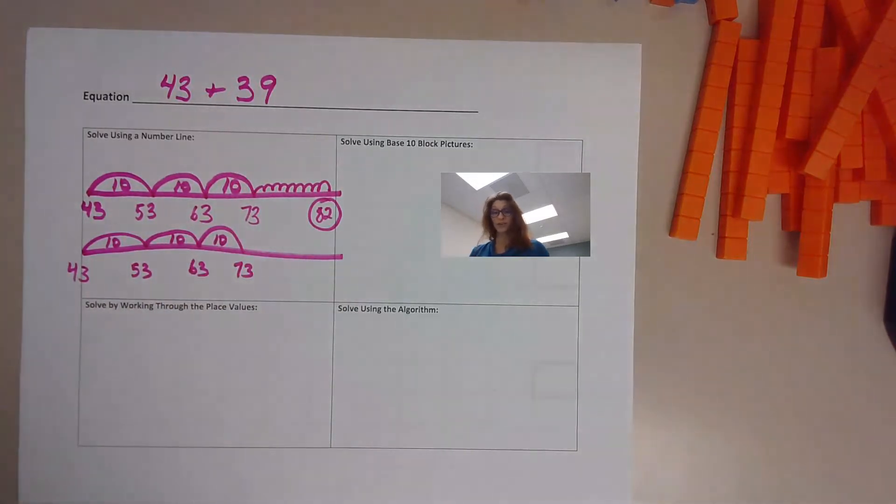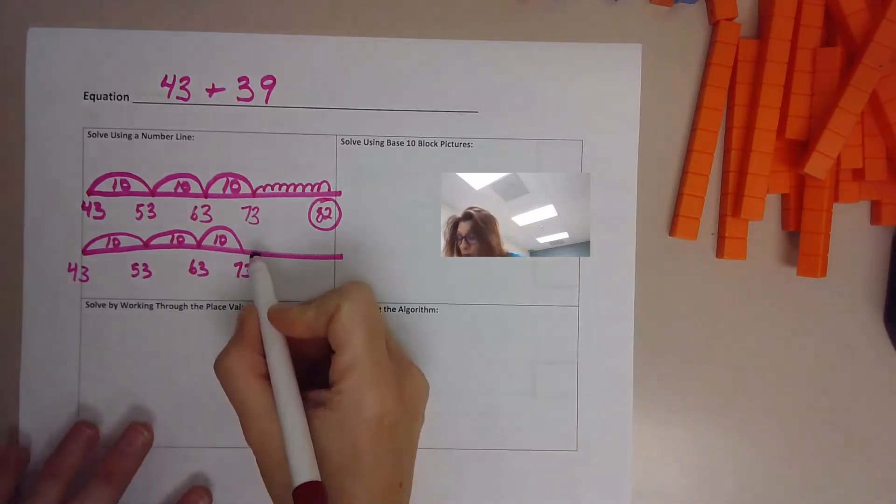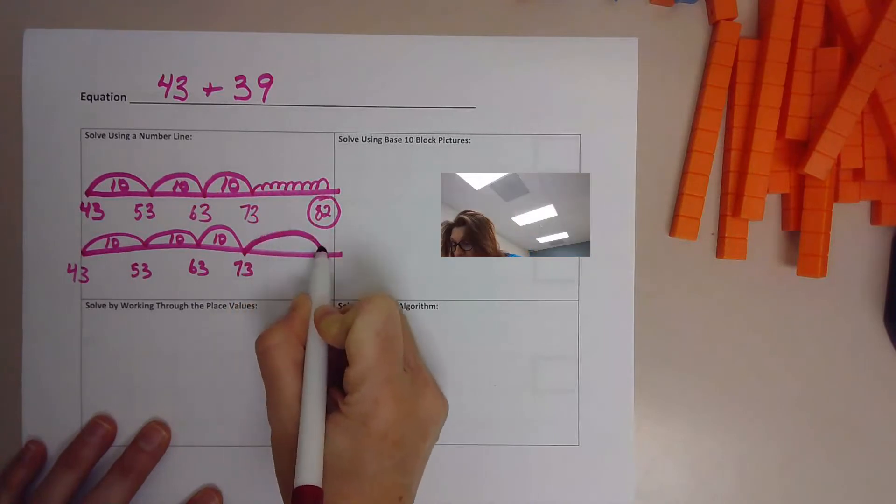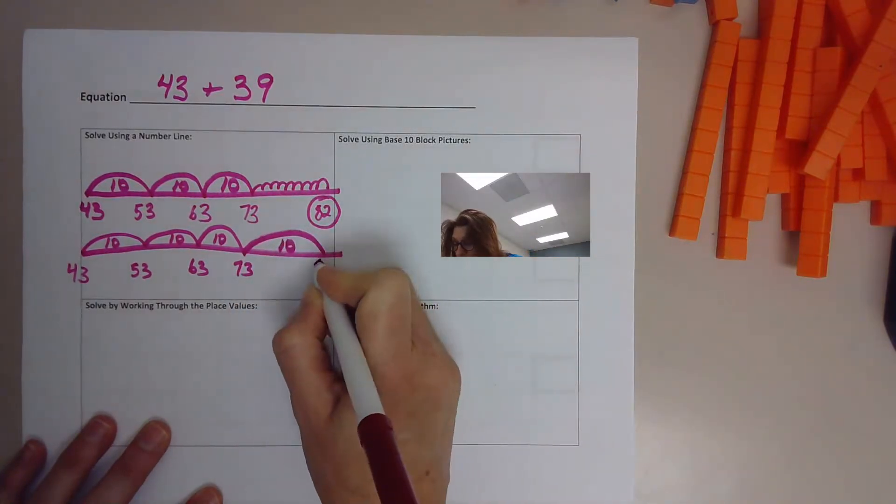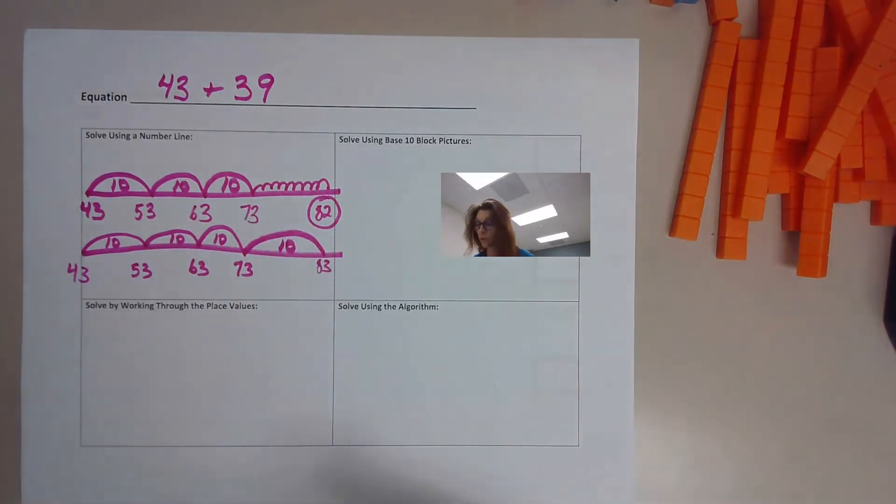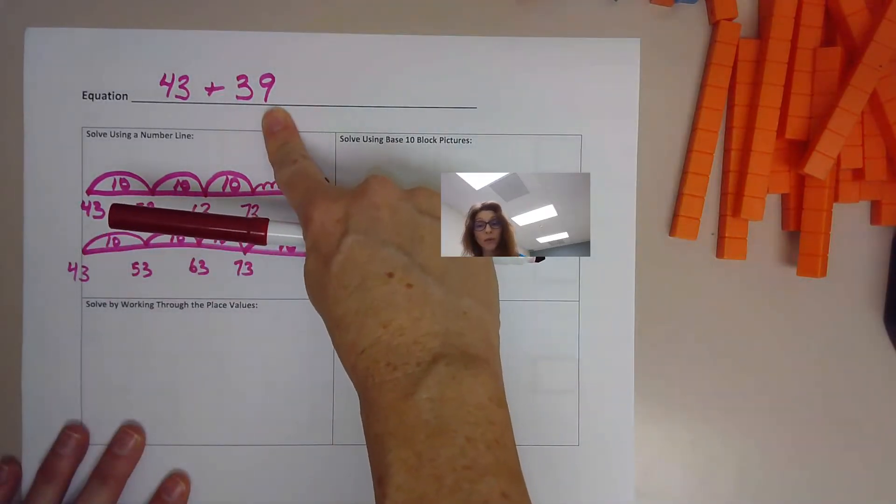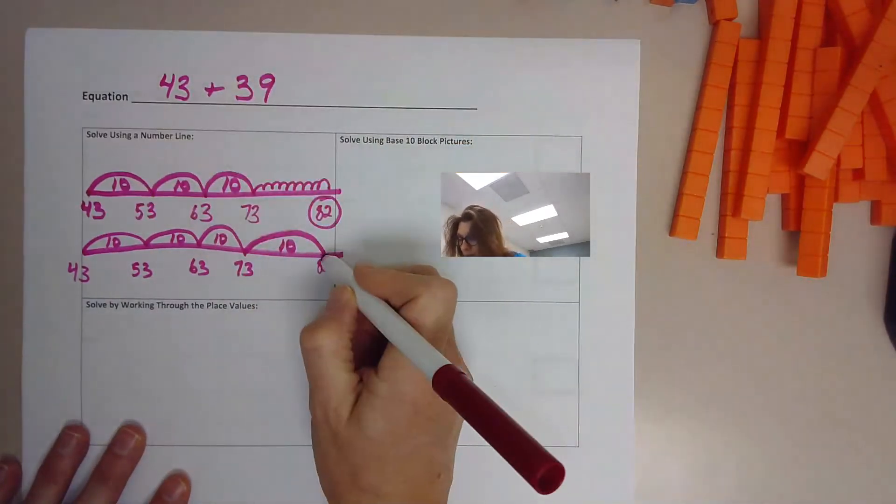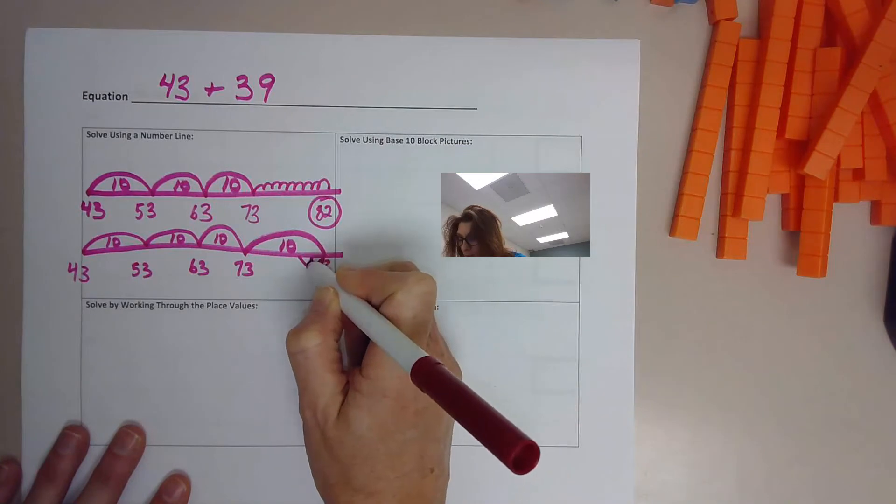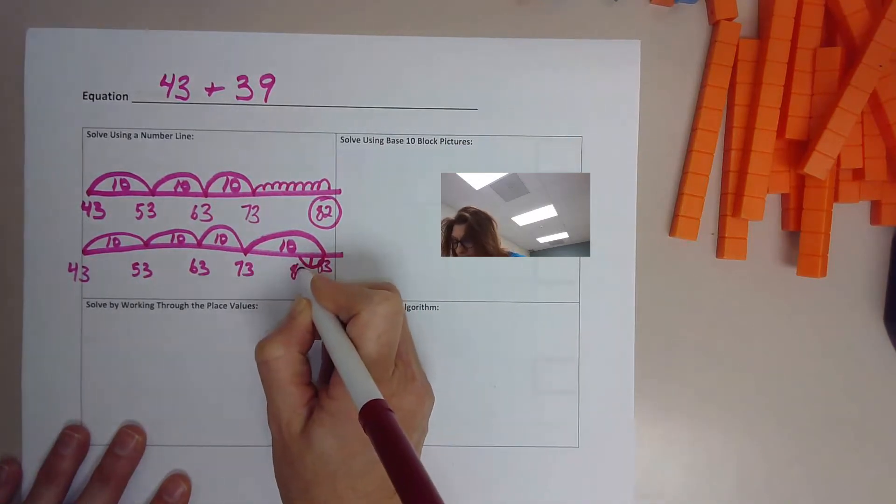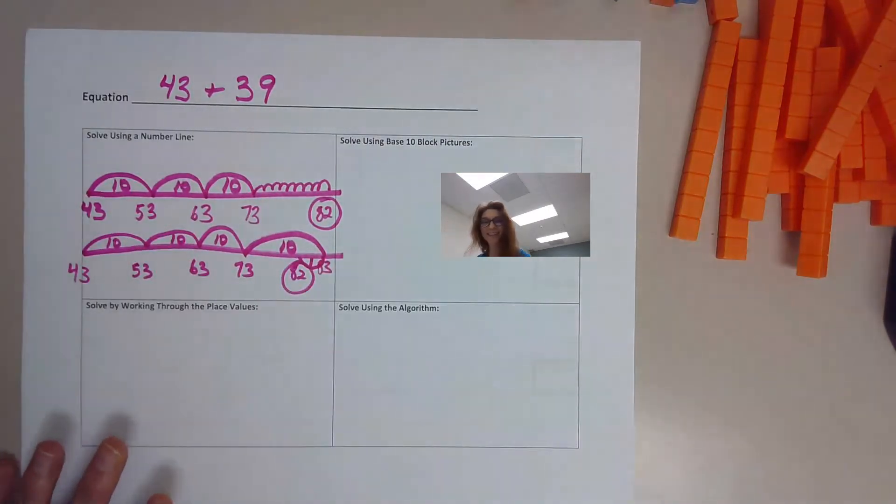These are all worth 10. Then what you can do is say, hey, wait a second. Nine is really, really close to 10. I'm going to take a jump of 10 and then take one away. So you can do one more jump of 10, which brings you to 83. But we don't want to add 10. We only want to add 9. So then you take, I like to go underneath, take one away. That gets you to 82.